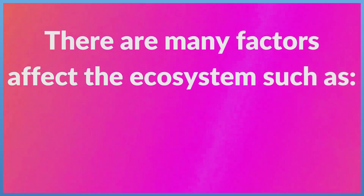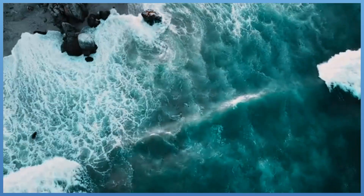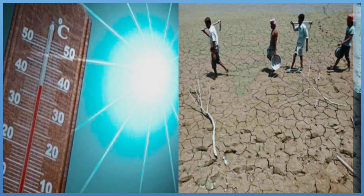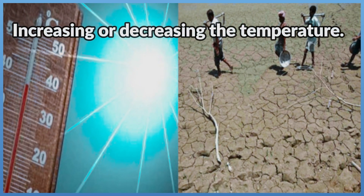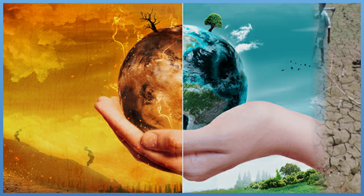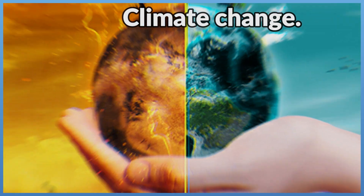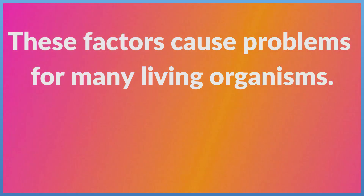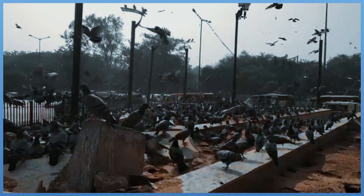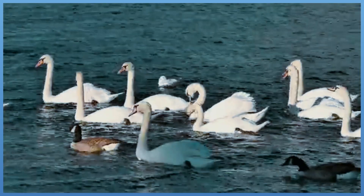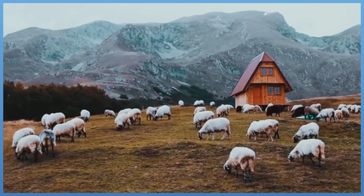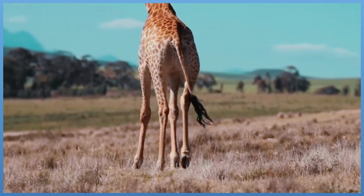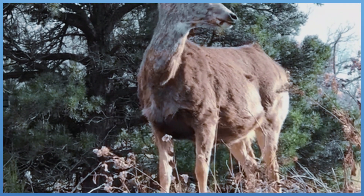There are many factors that affect the ecosystem, such as increasing or decreasing the amount of water, increasing or decreasing the temperature, and climate change. These factors cause problems for many living organisms. If the climate change is suitable, the population of a species increases. But if it is unsuitable, the population of a species decreases, so organisms would either die or move to another place.